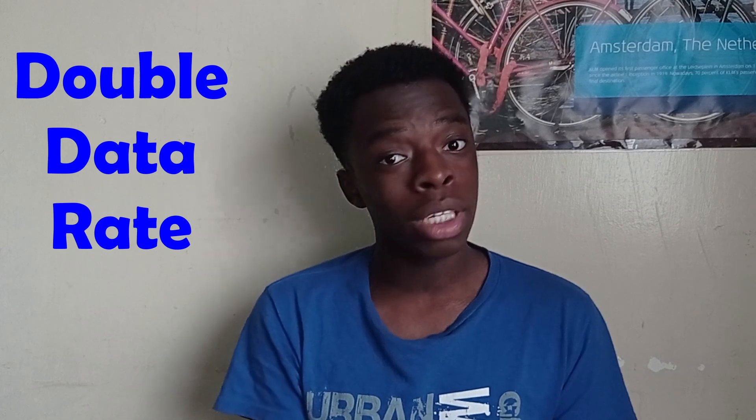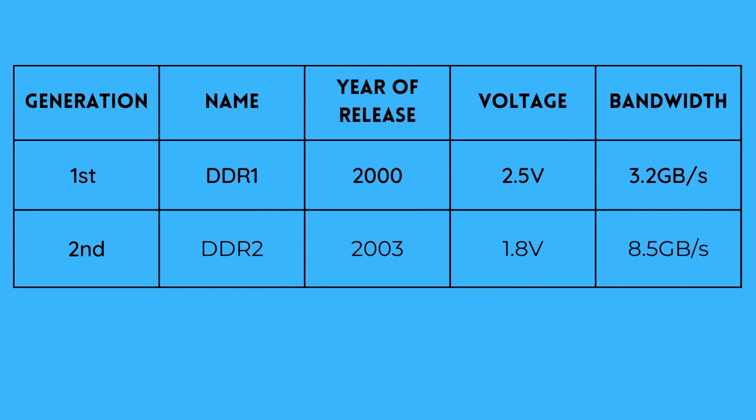The DDR type naming represents the different generations of RAM. DDR in itself is an acronym for double data rate. The first generation was known as DDR or DDR1 — it was released in 2000, had a voltage of 2.5 volts and a bandwidth of 3.2 gigabits per second. DDR2 was released in 2003 and had a lower voltage of 1.8 volts and an increased bandwidth of 8.5 gigabits per second. DDR1 and DDR2 are not available currently because they were considered outdated.